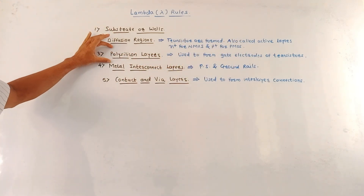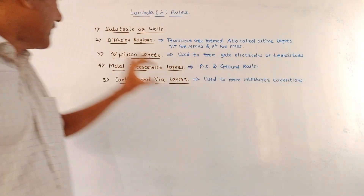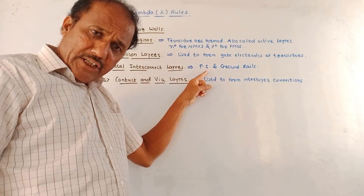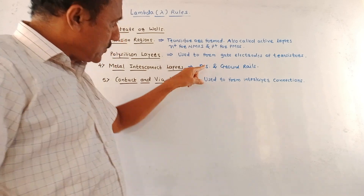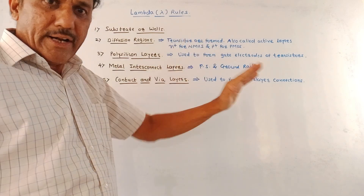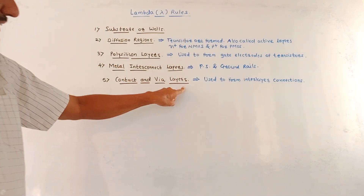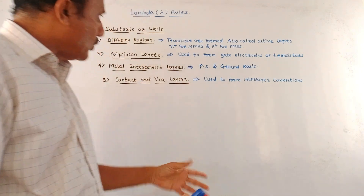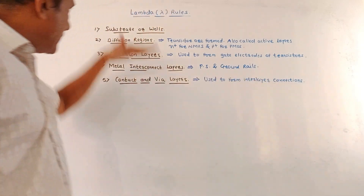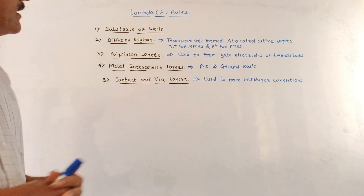Then there is the polysilicon layer, which is used to form gate electrodes of the transistors. Then metal interconnect layers, which are used to interconnect power supply and ground as well as for input and output. Then contact and wire layers, which are used to form inter-layer connections. These are the different components which affect the lambda rules.